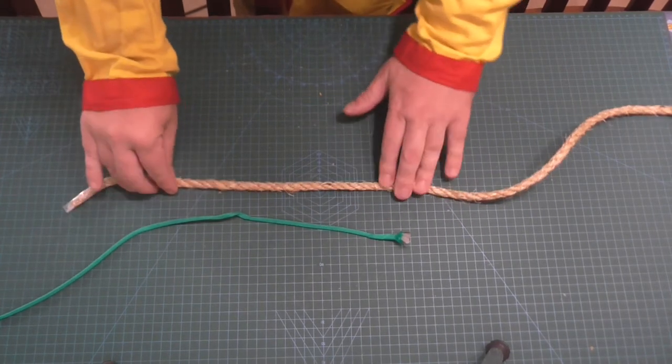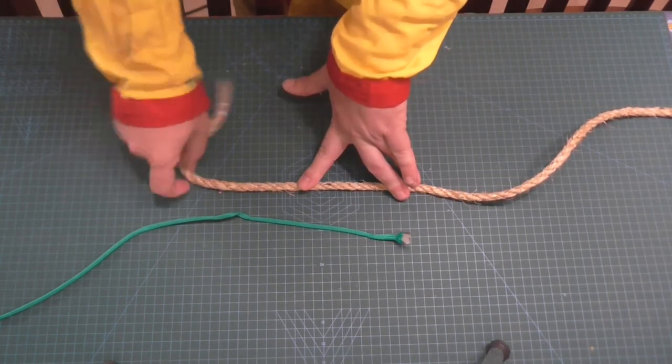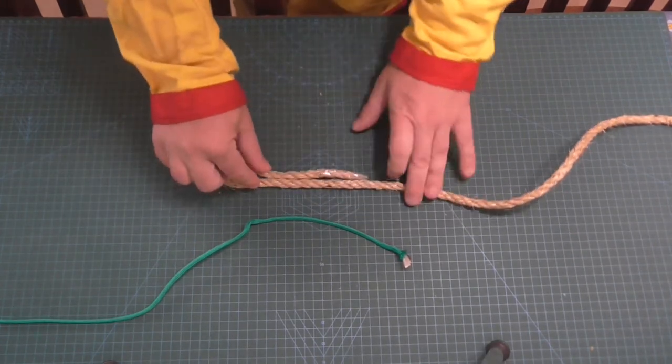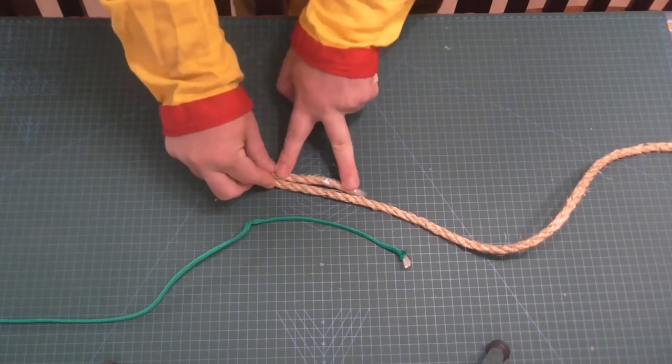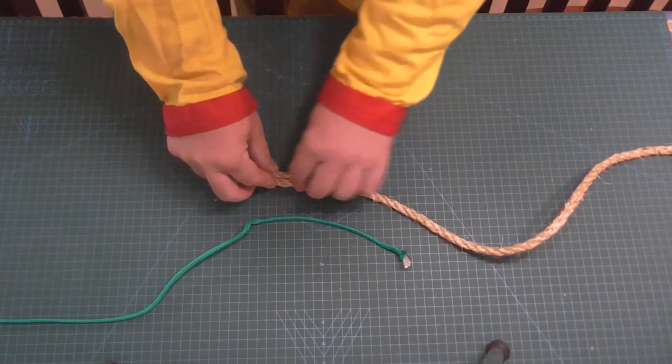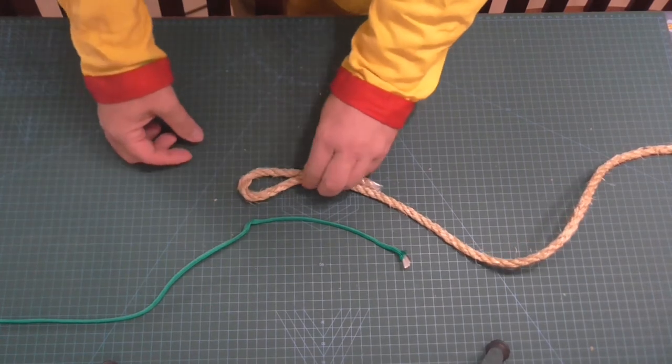The first thing we're going to do is we're going to take the thicker piece of rope and we're going to put a bend in it like so. I like to keep a nice, this is probably three, four inches, roughly sort of eight to twelve centimeters approximately.